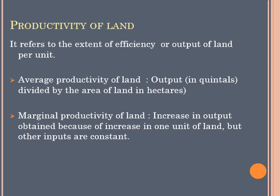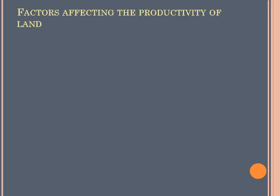Now we are going to look at the factors that affect the productivity of land. Our first factor is fertility of land. If the land is nice, flat, and well-leveled, it is going to produce more compared to undulating or slopey land, which gives less productivity. If the land is a plain leveled area, it will give us more produce.